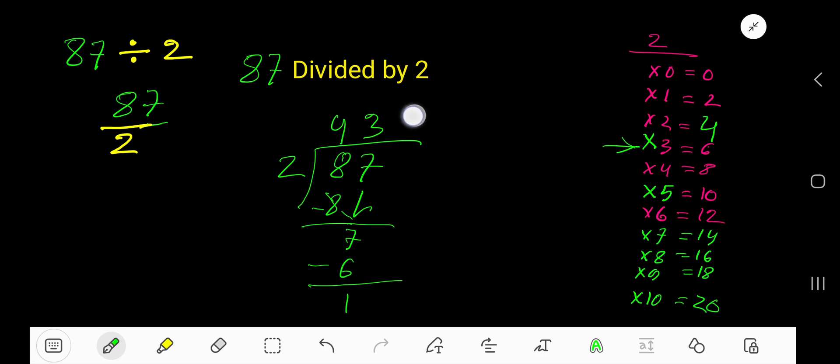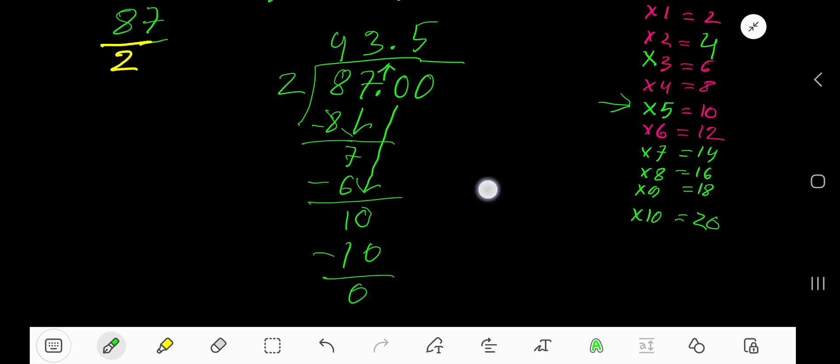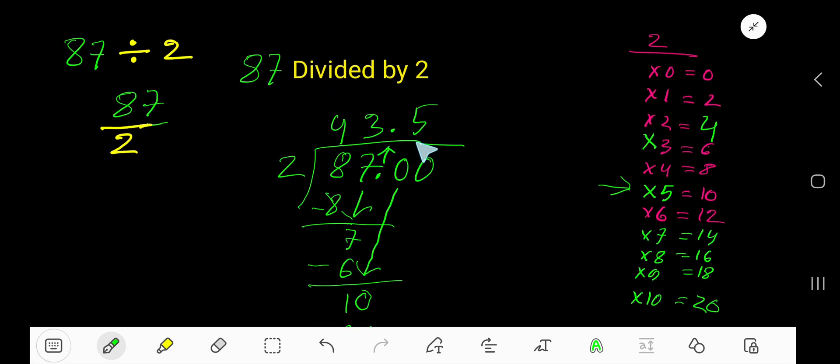But if you want to write your answer in decimal form, what will you do? Just take a decimal and write any number of zeros according to your need. Bring down the first zero. Before this zero there is a decimal; decimal must come to the quotient directly. 2 goes into 10 how many times? Look, 2 goes into 10 five times. 5 times 2 is 10. Subtract, 0. So your answer is 43.5.